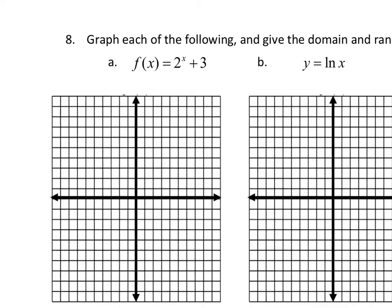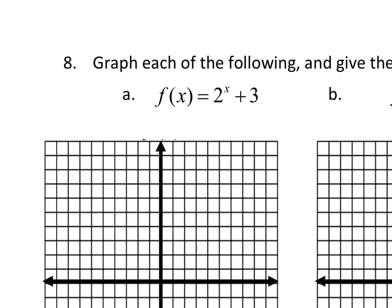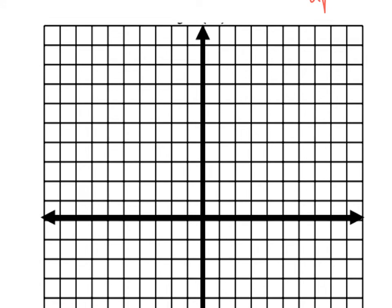Let's do some graphs now. We need to understand basic exponential and basic log graphs. If we have 2 to the x plus 3, the plus 3 is outside the exponent, so that's going to move it up. Any time we add or subtract after we do the function, it moves the graph up or down — plus moves it up. Any exponential function looks like this general shape; if the base is between 0 and 1, we have exponential decay. Exponential functions have a horizontal asymptote, normally at the x-axis. With plus 3, we have an asymptote at y equals 3.